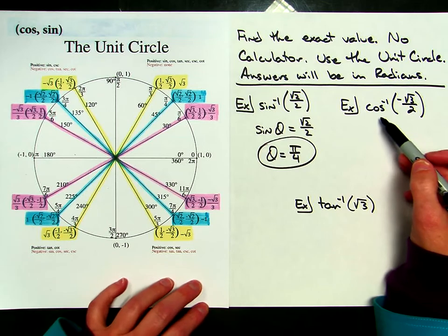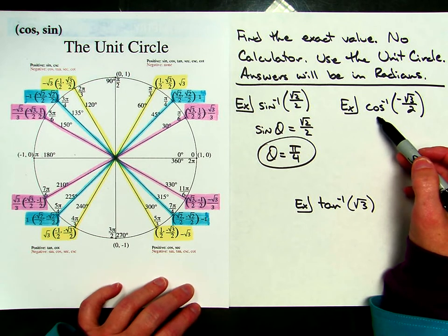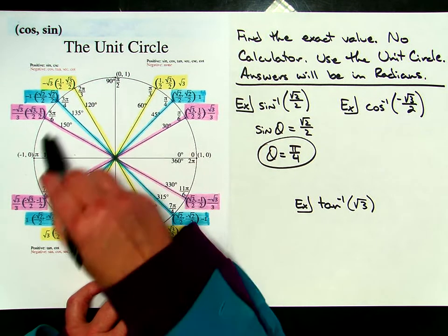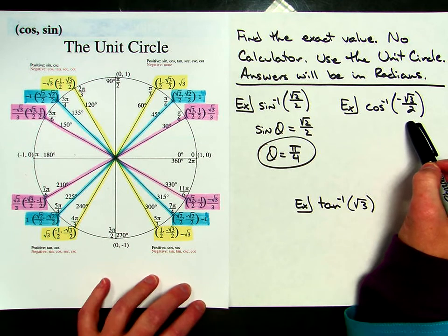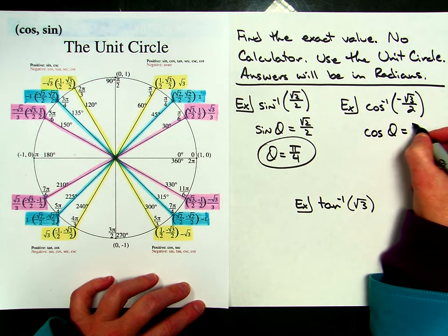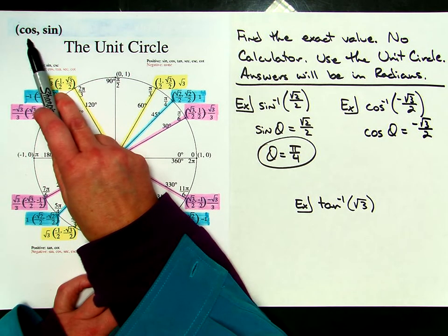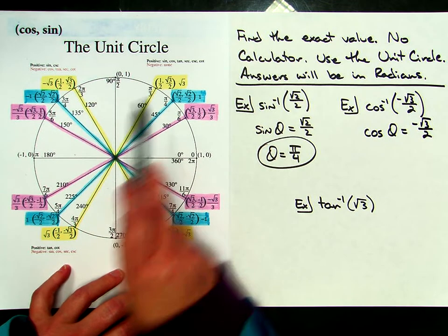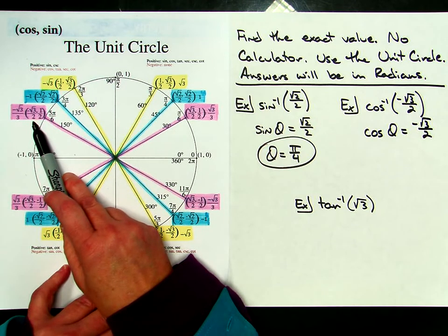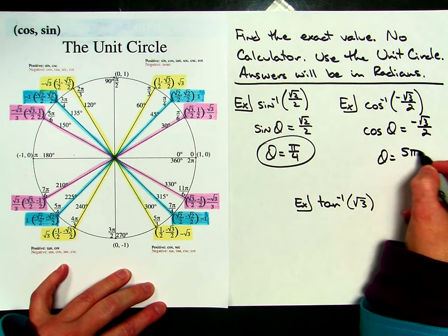Now let's do the inverse cosine of negative square root of 3 over 2. Recalling the restriction on cosine, we have to look in quadrants 1 and 2. I'm looking for negative square root of 3 over 2. You might think of it as: cosine of some angle theta equals negative square root of 3 over 2. The first coordinate of each ordered pair is cosine, so I look at every first coordinate until I find negative square root of 3 over 2 — and I find it right here in the second quadrant. That makes theta 5 pi over 6.